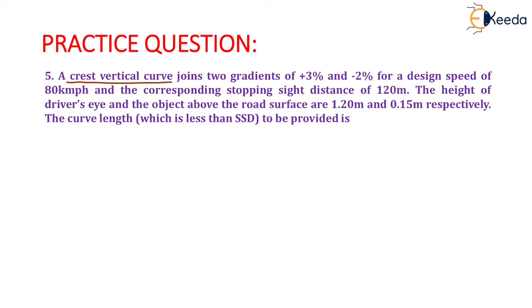A crest vertical curve joins two gradients of plus 3% and minus 2% for a design speed of 80 km per hour and a corresponding stopping sight distance of 120 meters.